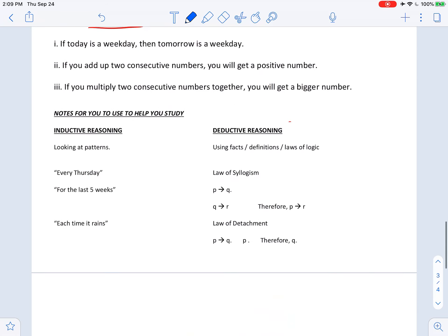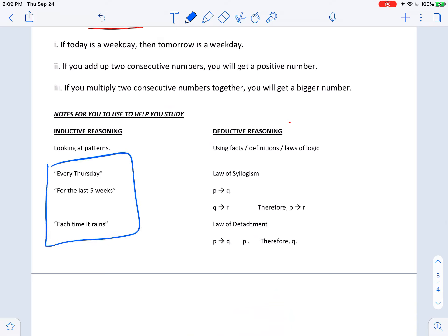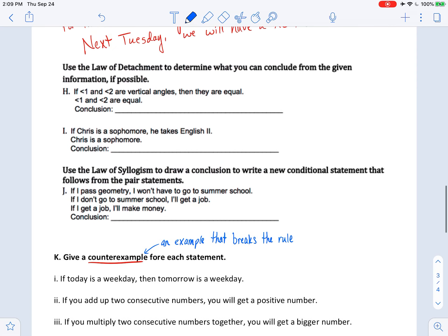You've got some key phrases like every Thursday or for the last five weeks or each time it rains. Those kind of phrases are the ones that really signal inductive reasoning, whereas deductive reasoning, anytime you see facts, definitions, vocab words, that kind of thing, that's going to be deductive reasoning.